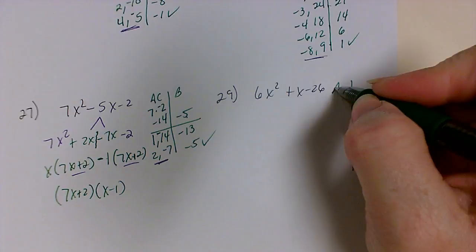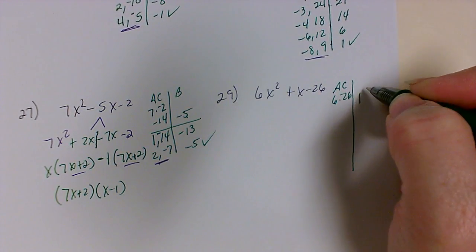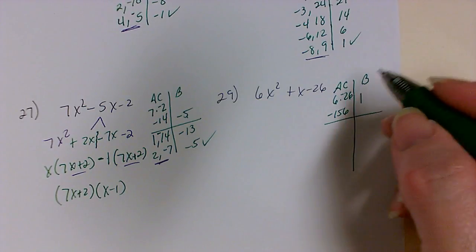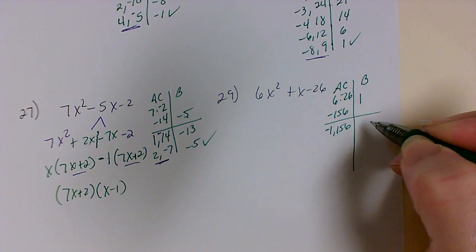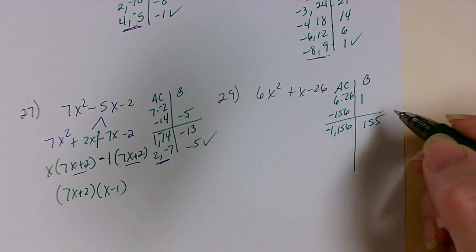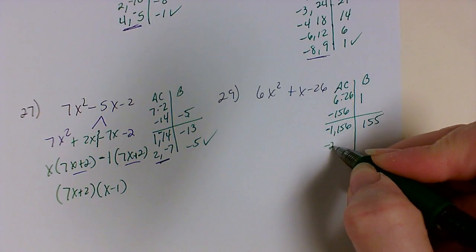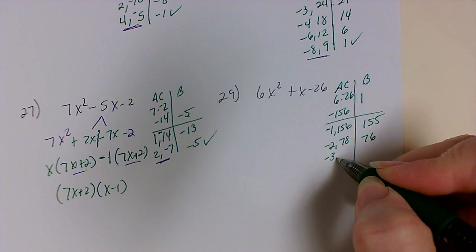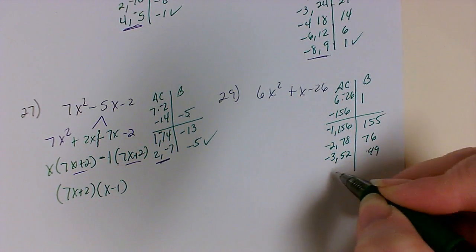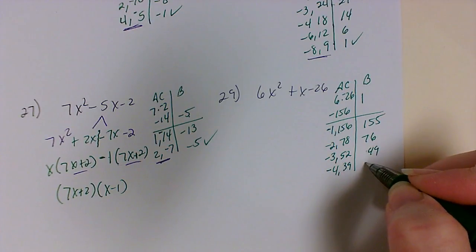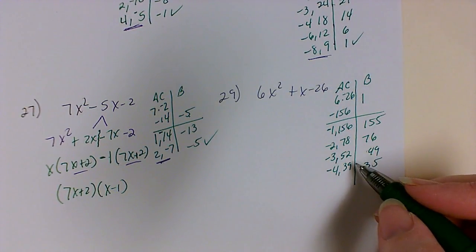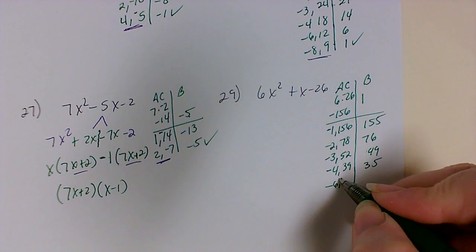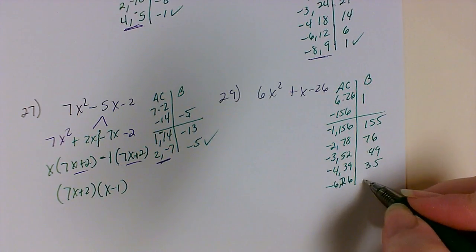Here I have a times c: 6 times negative 26 trying to get to positive 1, which is my b. That gives me negative 156 trying to get to 1. So 1 and 156: the negative goes on the 1, giving 155. Then divide by 2: negative 2 times 78 gives negative 156; add them, get 76. Negative 3 times 52 gives 49. Negative 4 times 39 gives negative 156; add them, get 35. 5 won't divide evenly, but 6 will: negative 6 times 26 gives negative 156; add them, get 20.